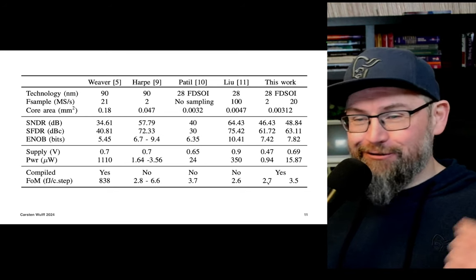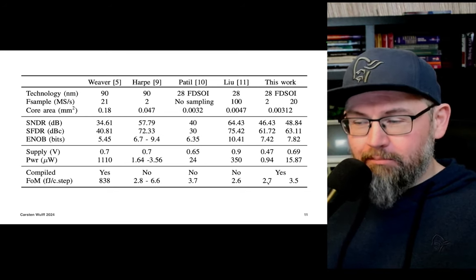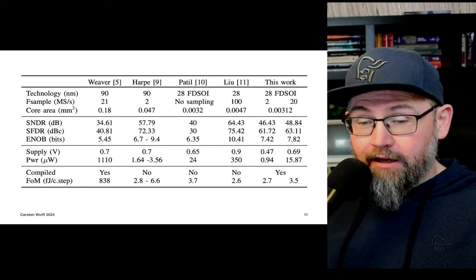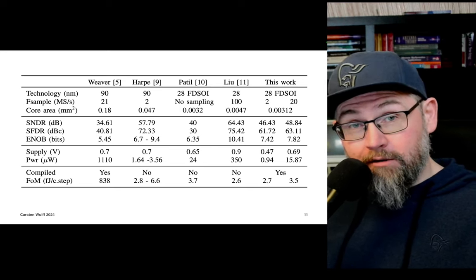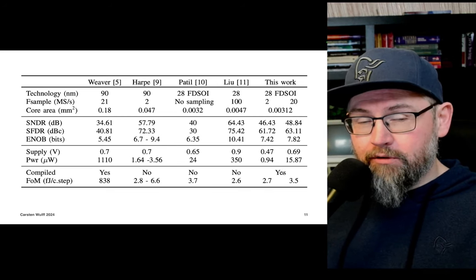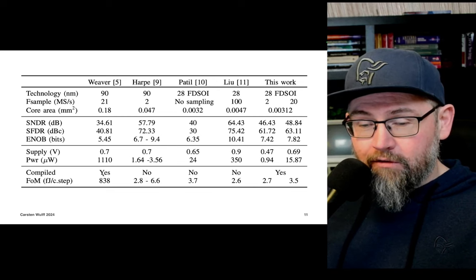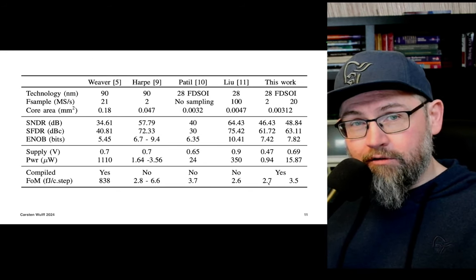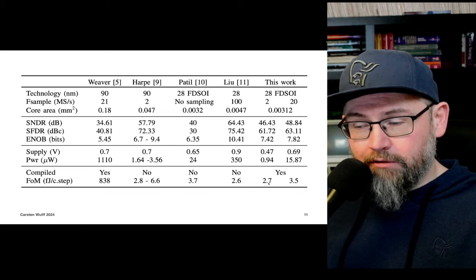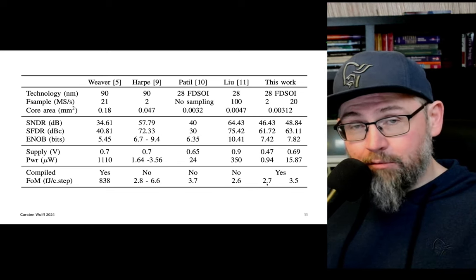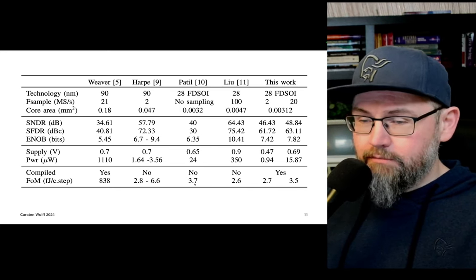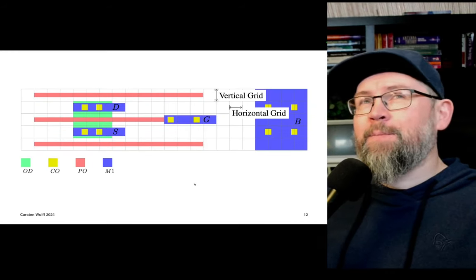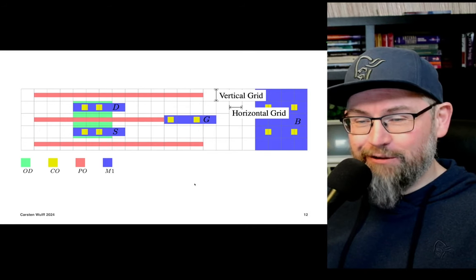What made the difference with the reviewers was the fact that my ADC was compiled. Compared to the compiled version from Weaver, we're talking a 300× improvement in figure of merit, down to a level similar to state-of-the-art. So what is this 'compiled' thing? Basically it was at the time a new way of thinking about how to make an ADC.